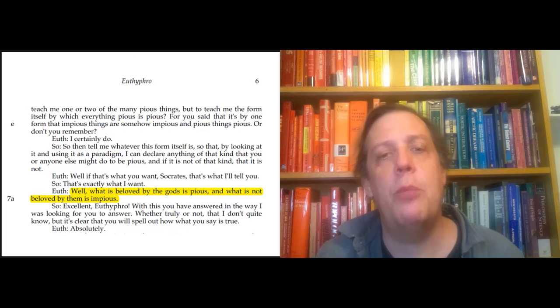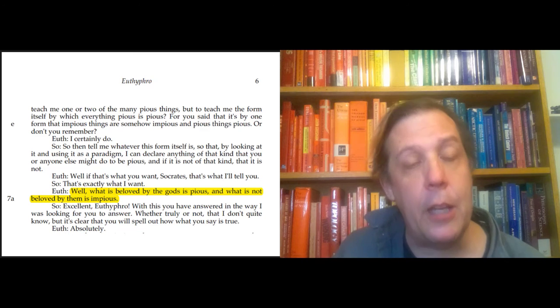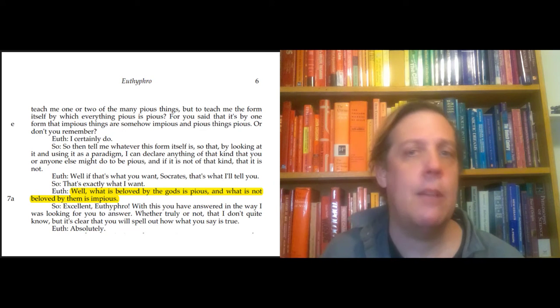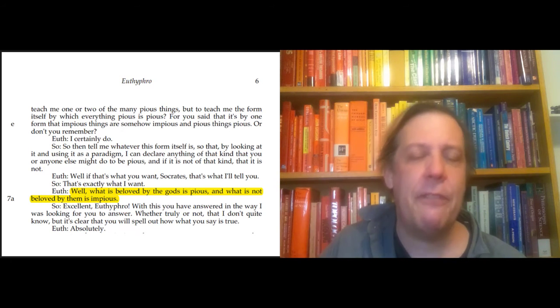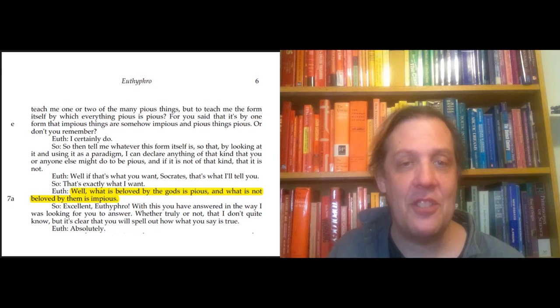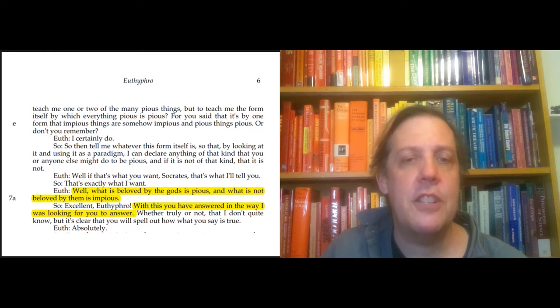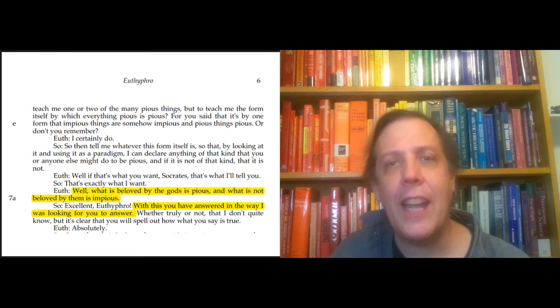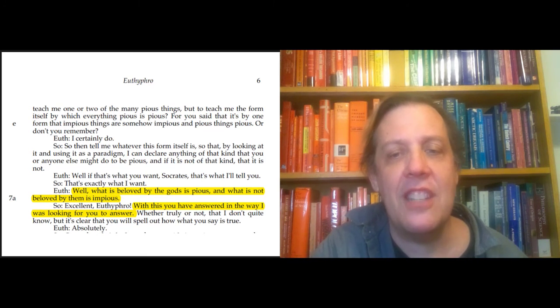Euthyphro says, what is beloved by the gods is pious and what is not beloved by them is impious. This is the real turning point, where the real fun starts. Socrates has asked Euthyphro what is piety. Initially, Euthyphro just gave examples. Now Euthyphro has said something is pious if it's loved by the gods. Socrates says, with this, you have answered in the way I was looking for. We're doing real philosophy now.